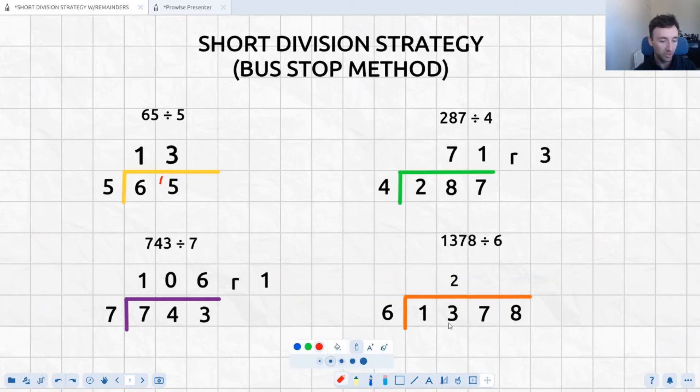Then there is a remainder, a remainder of 1. Now 6 doesn't quite go into 17 three times. It goes into 17 twice to make 12. So I'm going to write another 2 there. And they are a little bit different size. I'm not sure why, but that's okay. And then we have a remainder of 5, and that 5 is going to go into our units column next to the 8.